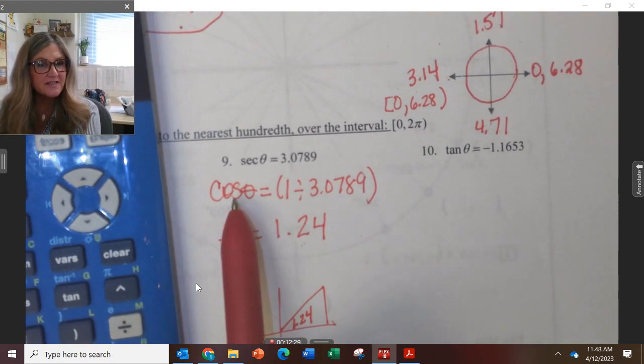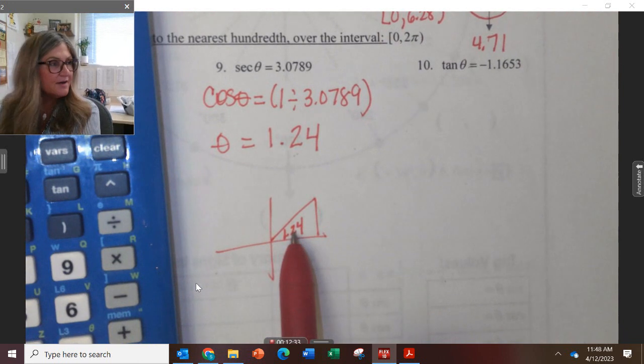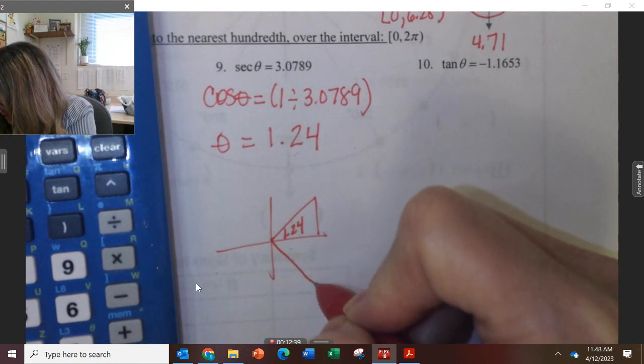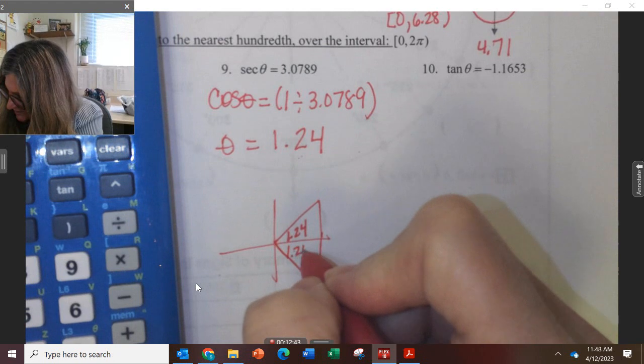Which other quadrant is going to have cosine and secant positive besides quadrant 1? Quadrant 4. So I'm going to have to go to quadrant 4 with the same reference angle, 1.24.